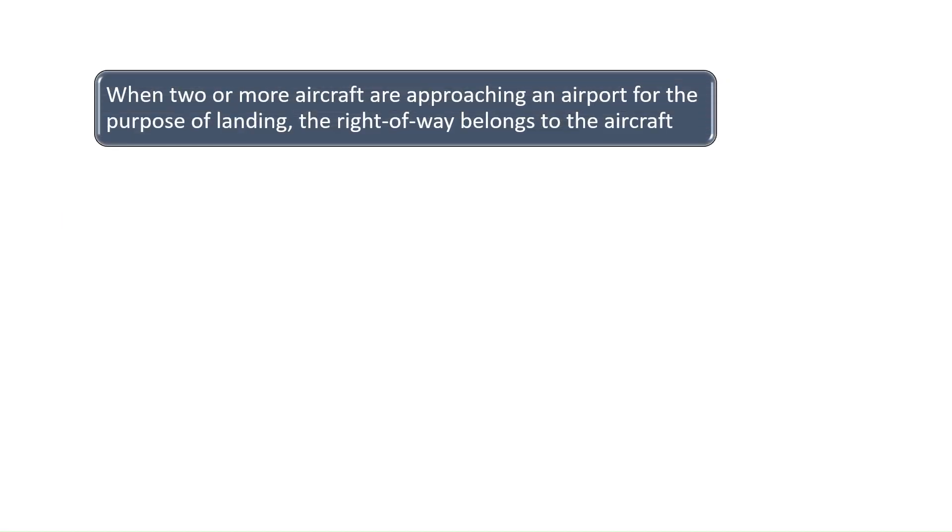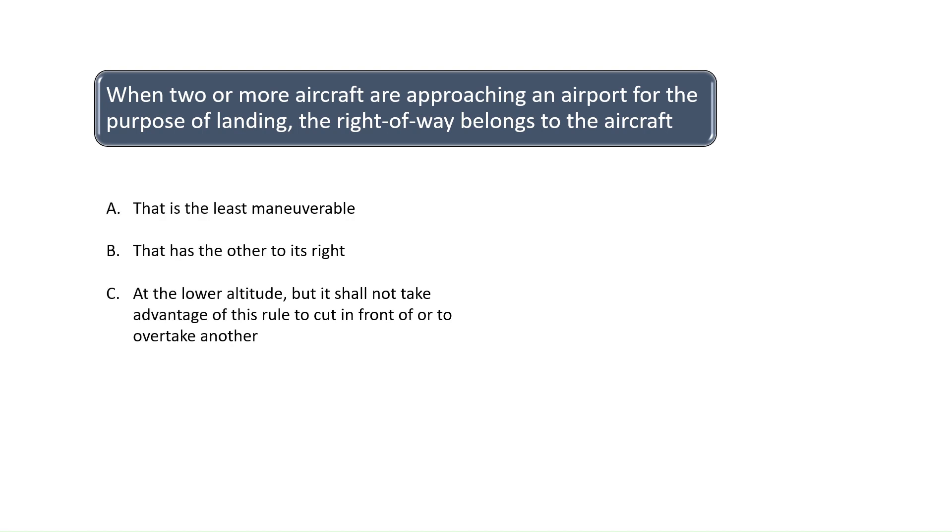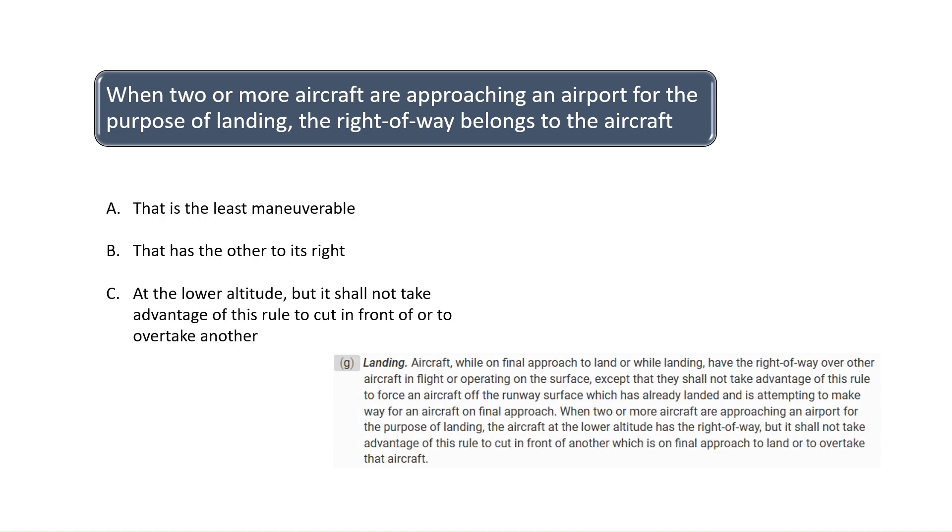When two or more aircraft are approaching an airport for the purpose of landing, the right-of-way belongs to the aircraft. According to FAR Part 91.113, when two or more aircraft are approaching an airport for the purpose of landing, the aircraft at the lower altitude has the right-of-way, but it shall not take advantage of this rule to cut in front of another which is on final approach to land or to overtake that aircraft. The correct answer is C.